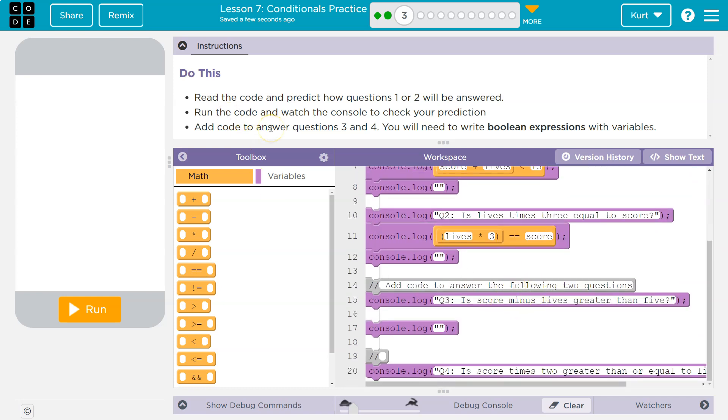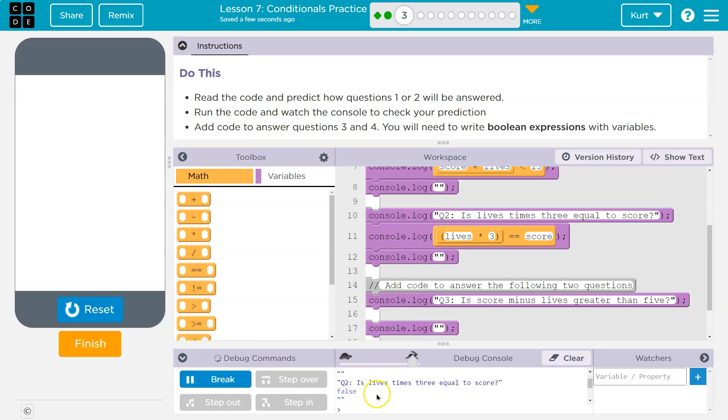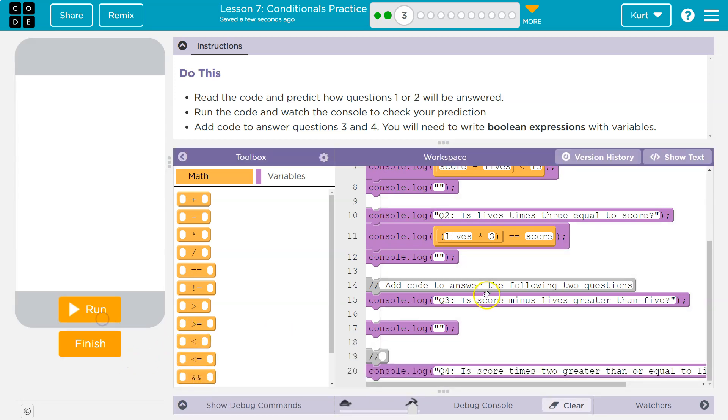Let's see what we need to do now. Add code to answer the questions. Oh, we can also show you. False and false. All right, so we got those first two. Great. All right, what questions do we have?